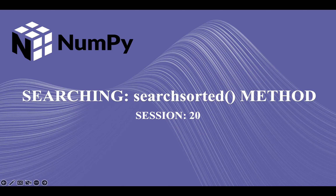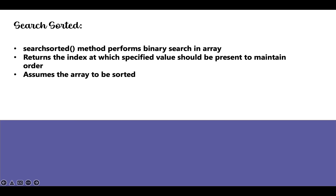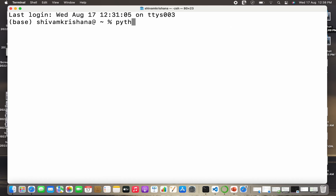Hi guys, welcome back to our course on NumPy. In our previous lecture we started our discussion on searching in NumPy arrays and I demonstrated the use of the where method. In today's lecture we are going to cover the searchsorted method for searching in NumPy arrays. The searchsorted method performs binary search in an array and returns the index at which the specified value should be present in order to maintain sorted order. It assumes the array to be sorted. So let's move on to the coding part.